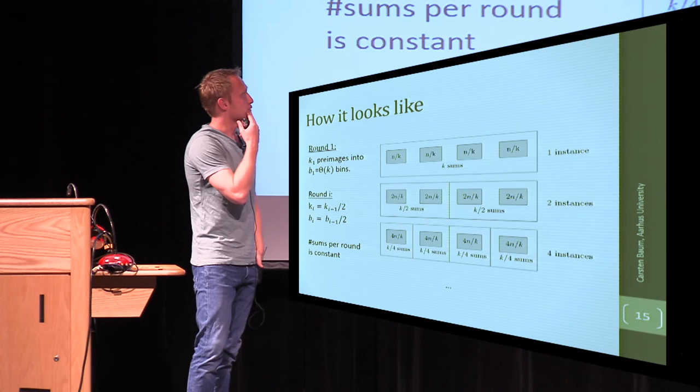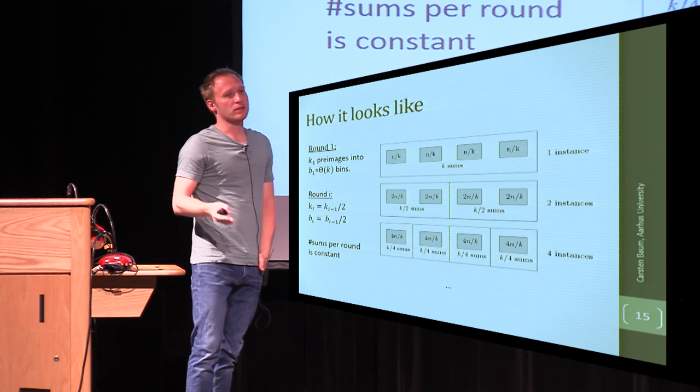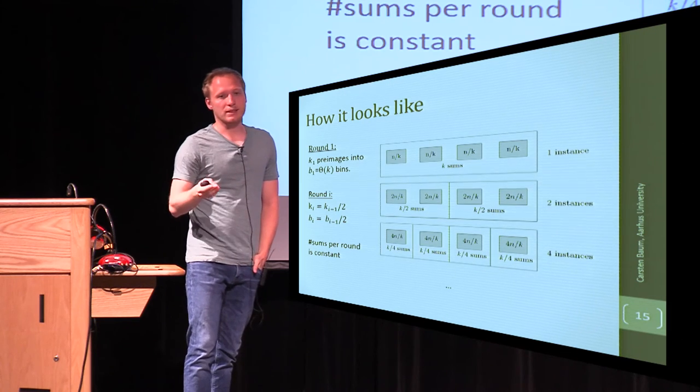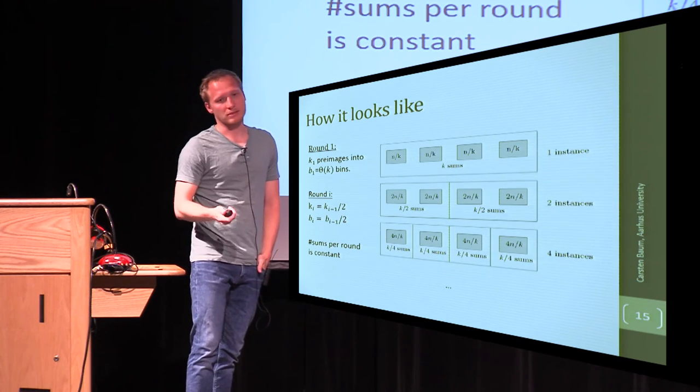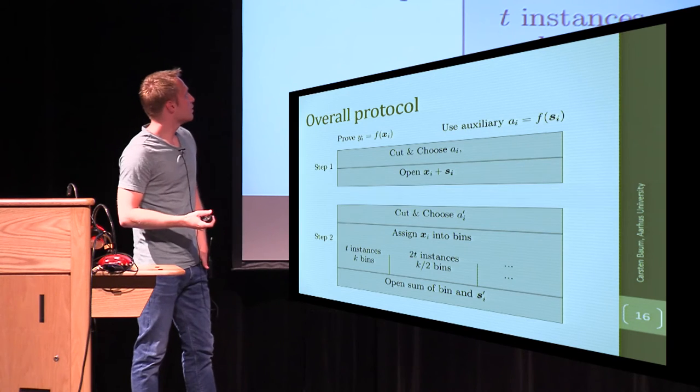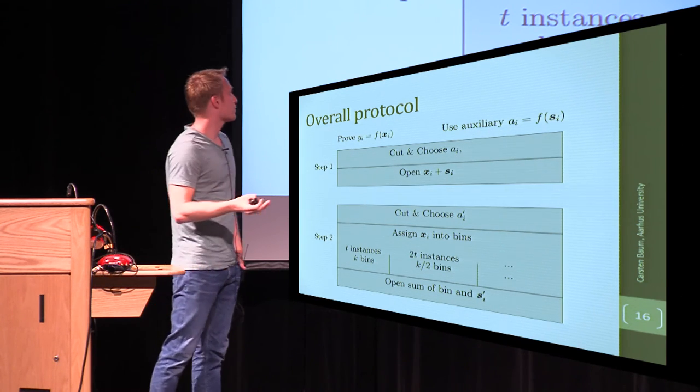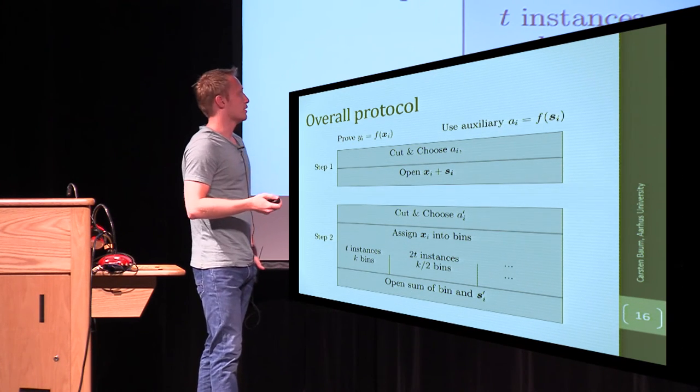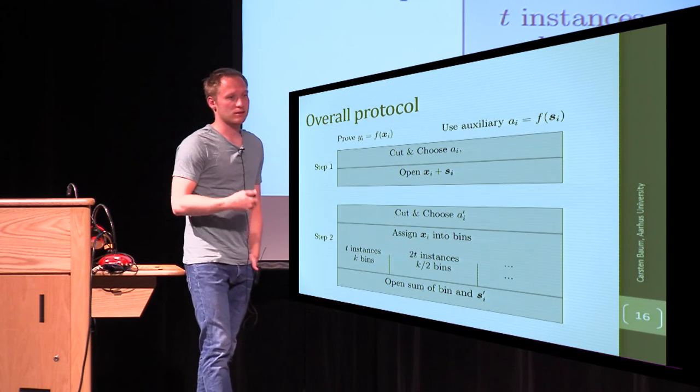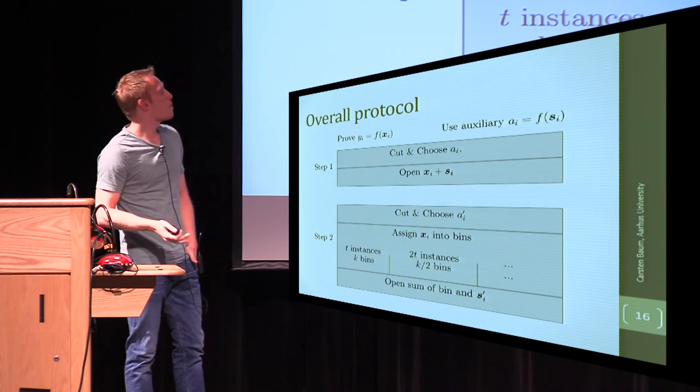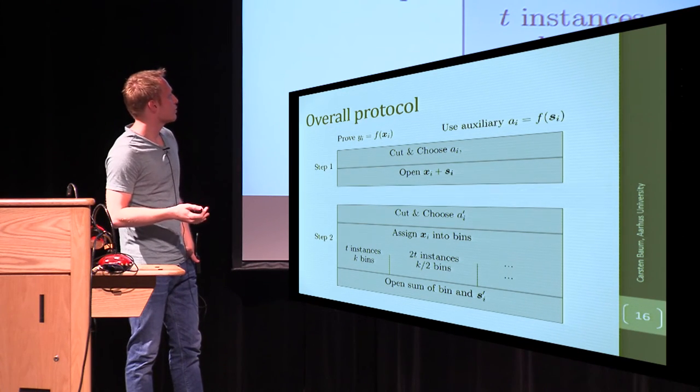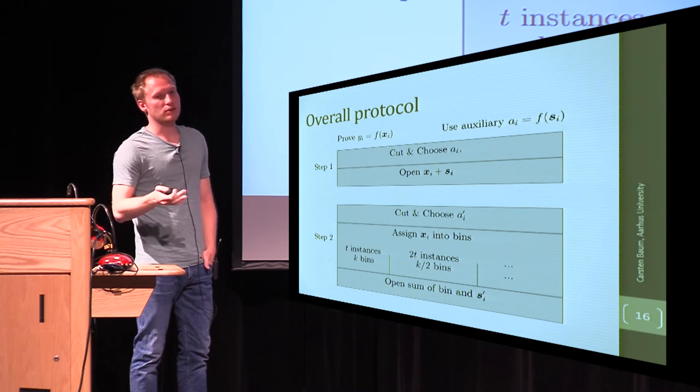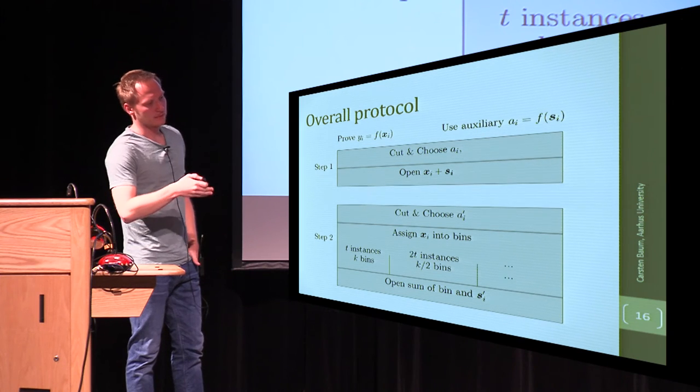So, this is already the overall protocol. In the first step, as I said, you do the cut and choose, and open the sum of the auxiliary value and the secret you want to prove knowledge of, and in the second step, you do a cut and choose again, but this time, instead of the actual elements, you would use these random sums as chosen, as explained before.